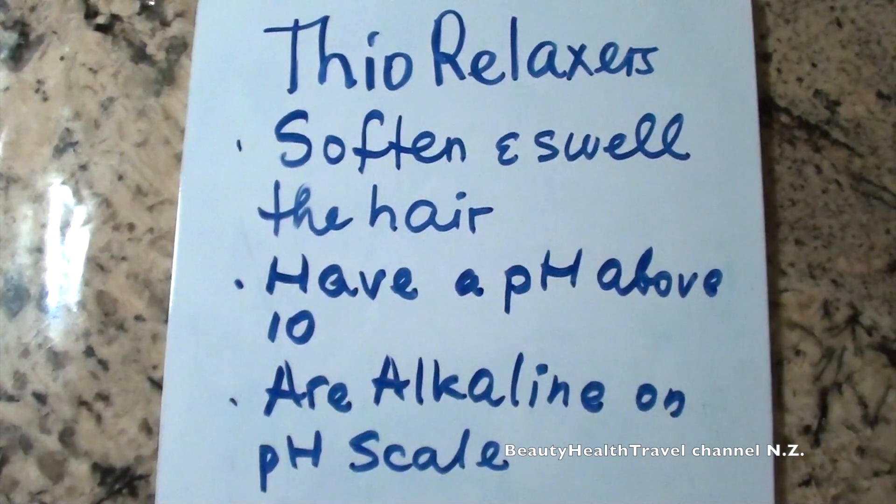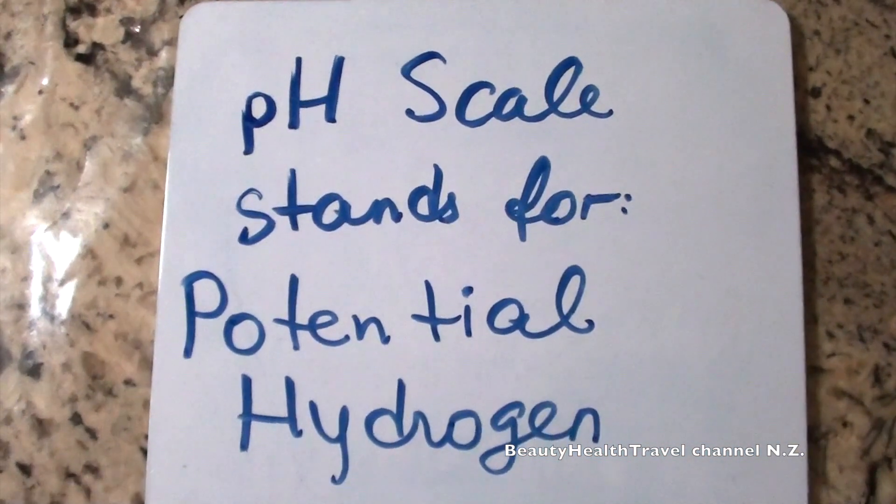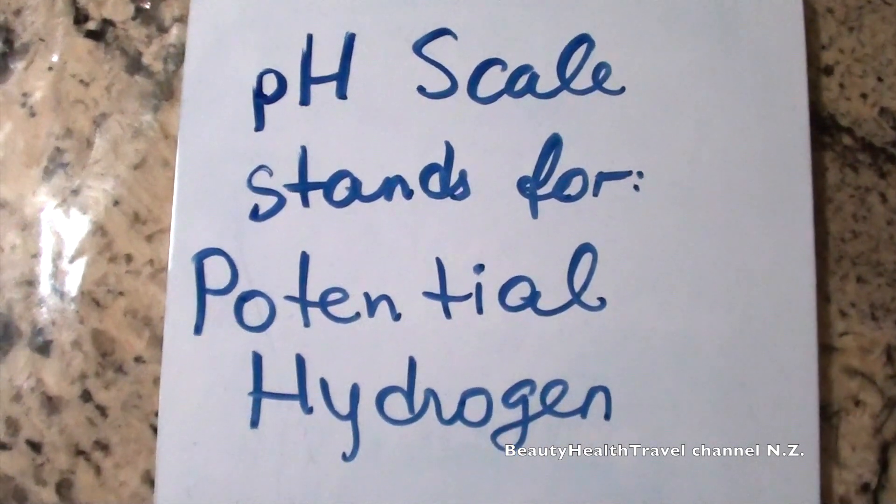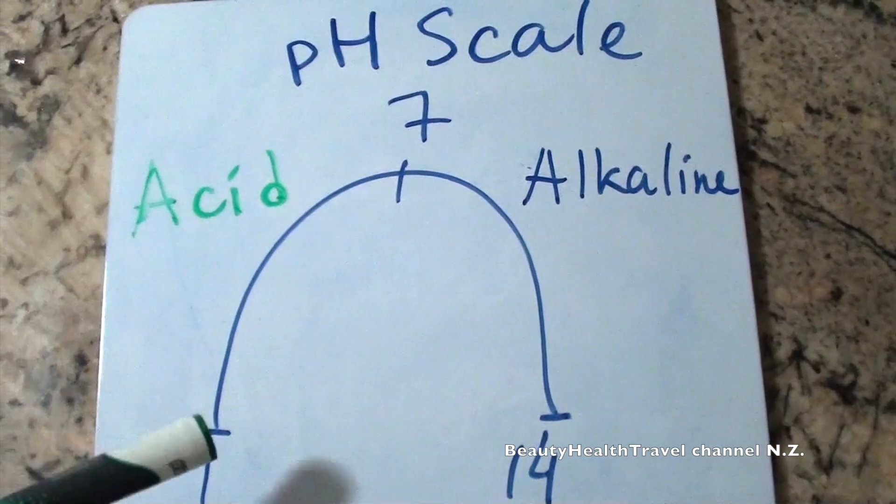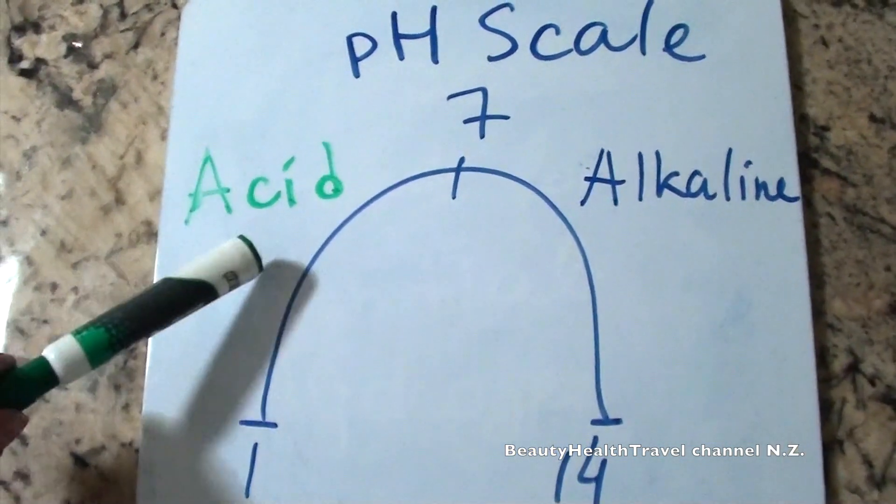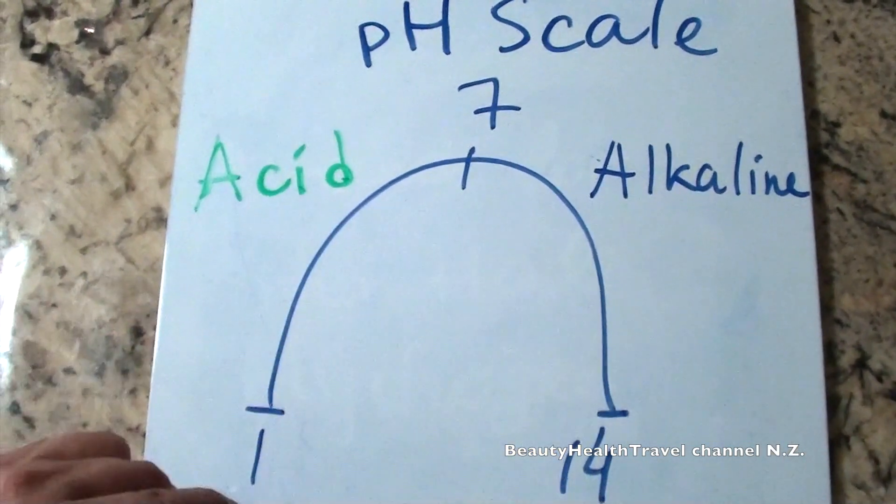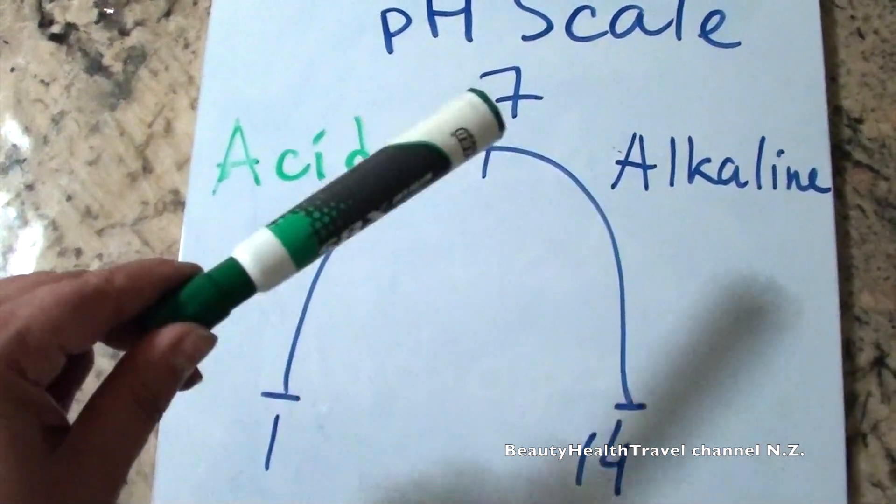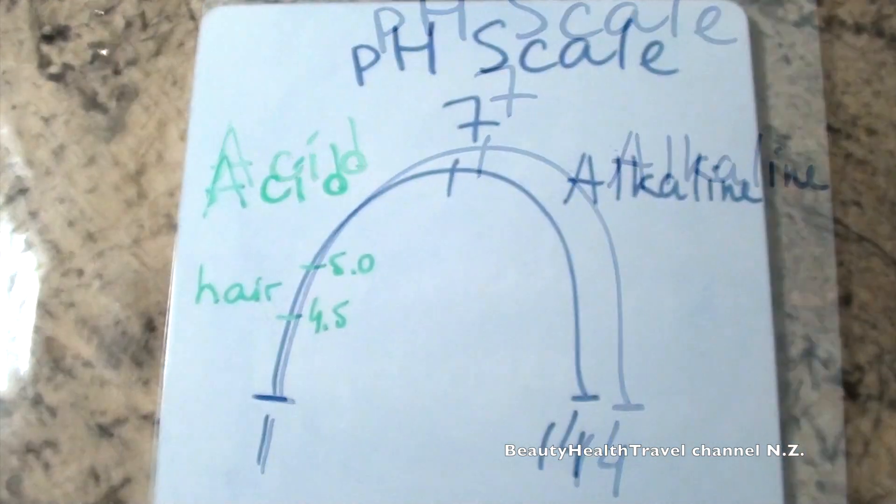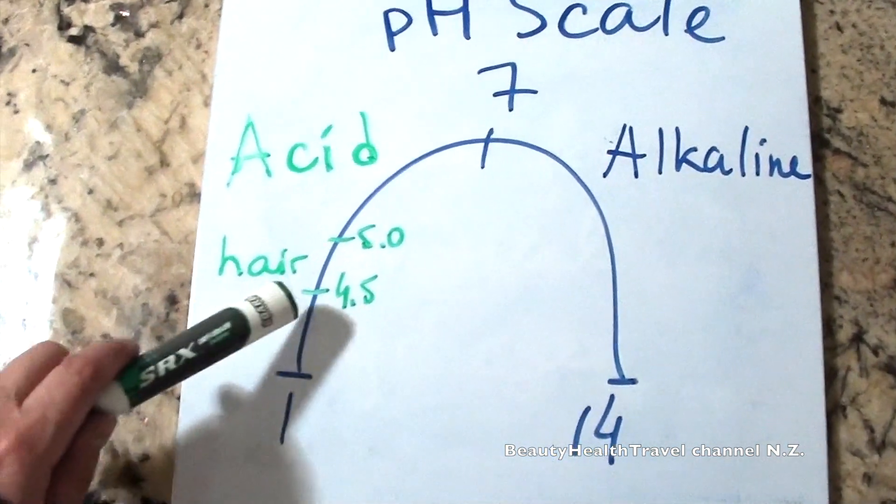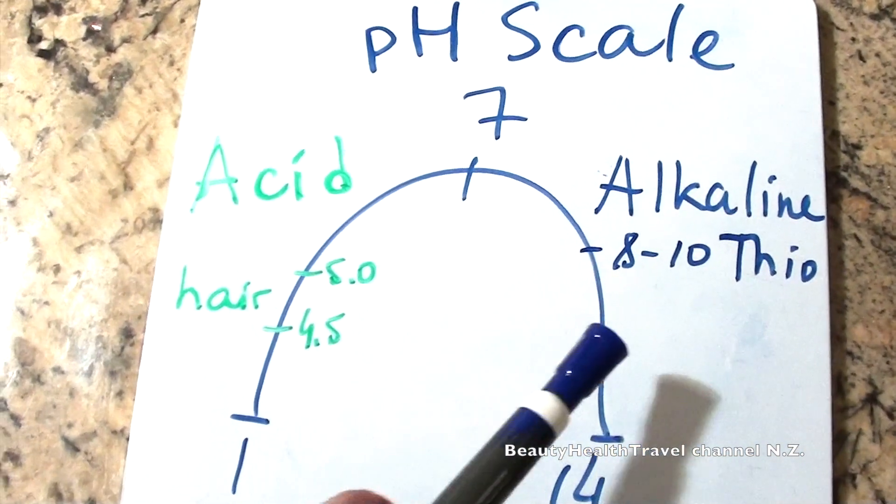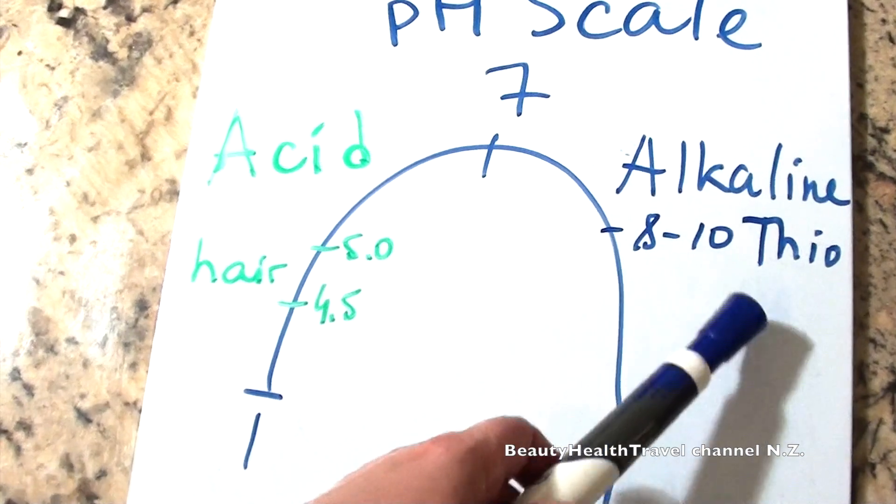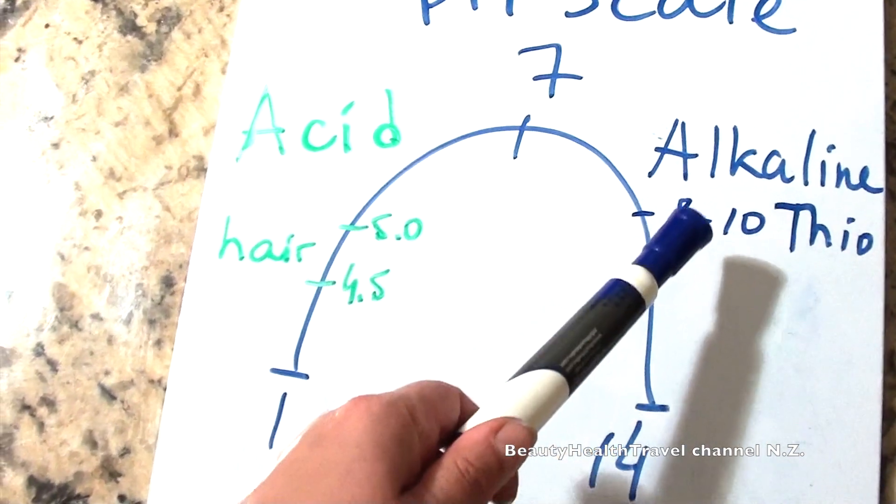Let's see it on a pH scale. pH scale stands for potential hydrogen. pH scale ranges from 1 to 7 acid, from 7 to 14 alkaline. 7 is neutral. The hair is from 4.5 to 5.0. Thio is from 8 to 10 on the pH scale. That means it's alkaline. Look how far it is from the hair.